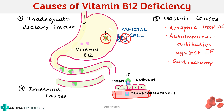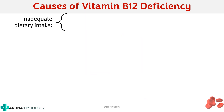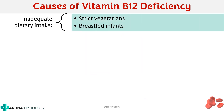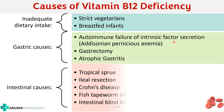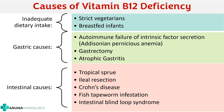There can also be intestinal causes leading to decreased absorption of vitamin B12. Causes of inadequate dietary intake include strict vegetarianism and breastfed infants. Gastric causes include autoimmune failure of intrinsic factor — also called pernicious anemia — gastrectomy, and atrophic gastritis. Intestinal causes include tropical sprue, ileal resection, Crohn's disease, fish tapeworm infestation, and intestinal blind loop syndrome.